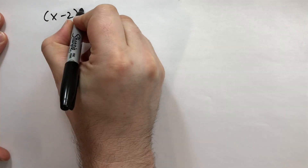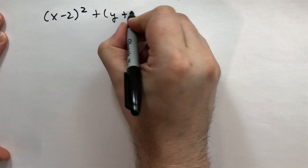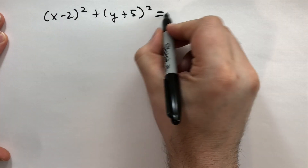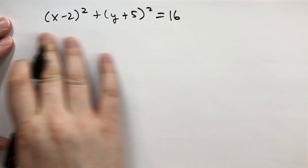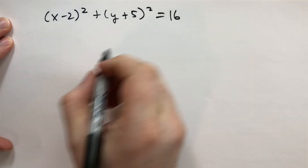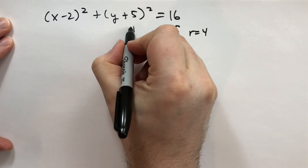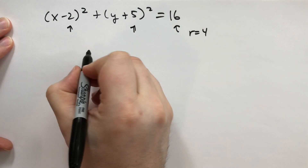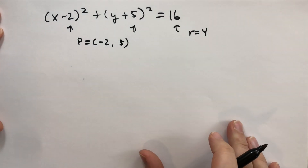Let's take an example. The equation looks like this: (x minus 2) squared plus (y plus 5) squared equals 16. Based on what we've learned, the square of the radius tells us the radius is equal to 4. The center of the circle is going to be at (2, minus 5) — remember you have to flip the signs.